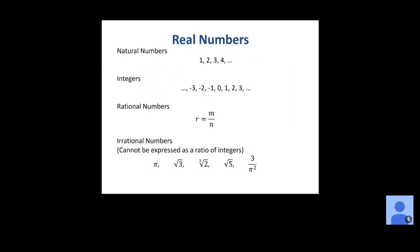This slide lays out what your different number systems are. Natural numbers are the counting numbers. Integers are all those counting numbers and their opposites, including 0. Rational numbers can be written as fractions, and irrational numbers are anything that cannot be expressed as a ratio of integers — in other words, can't be written as a fraction.